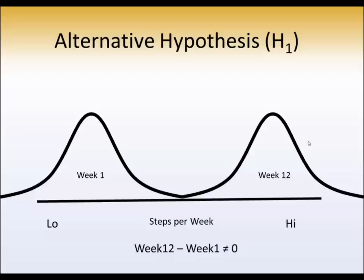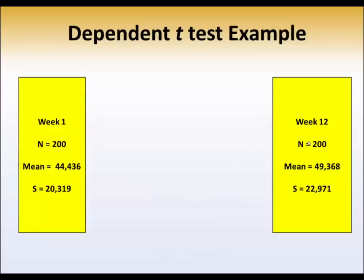We'll do that with the data set that we used in the previous video. For example, at week 1, 200 people, a mean of about 44,000 steps. Are they significantly different from one another? Or is the difference between them significantly different from zero? Is the mean difference zero?